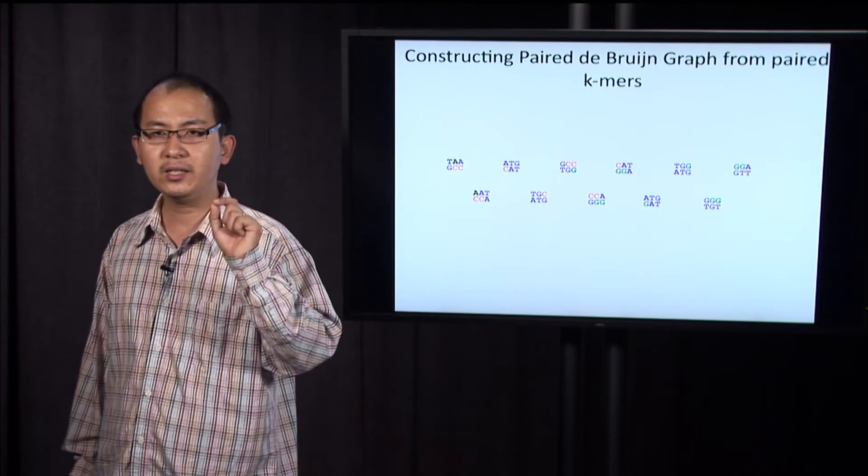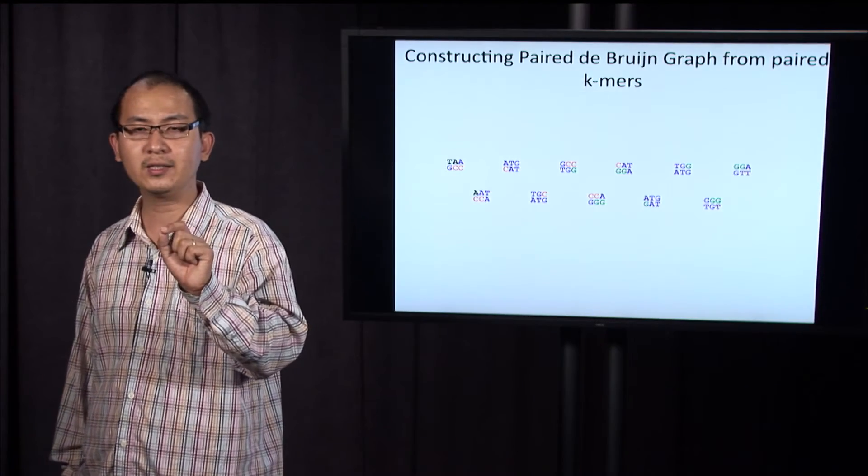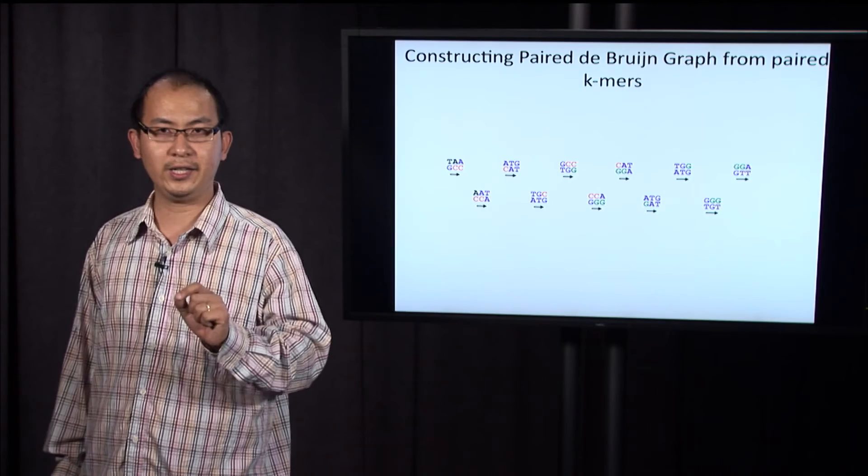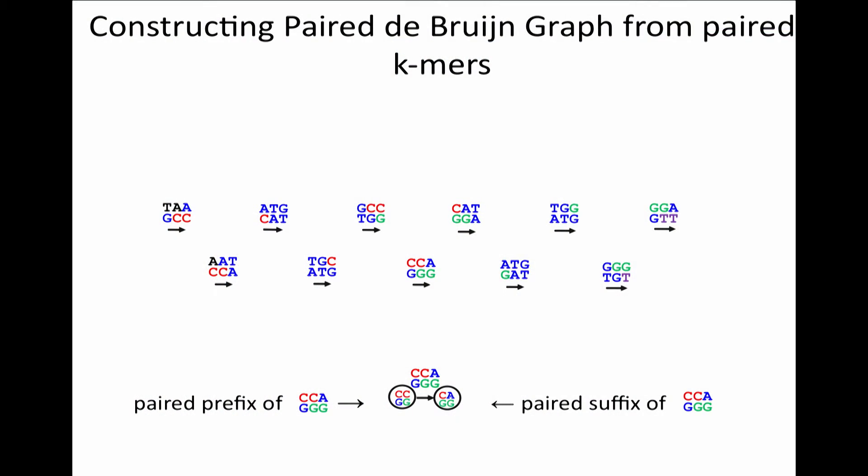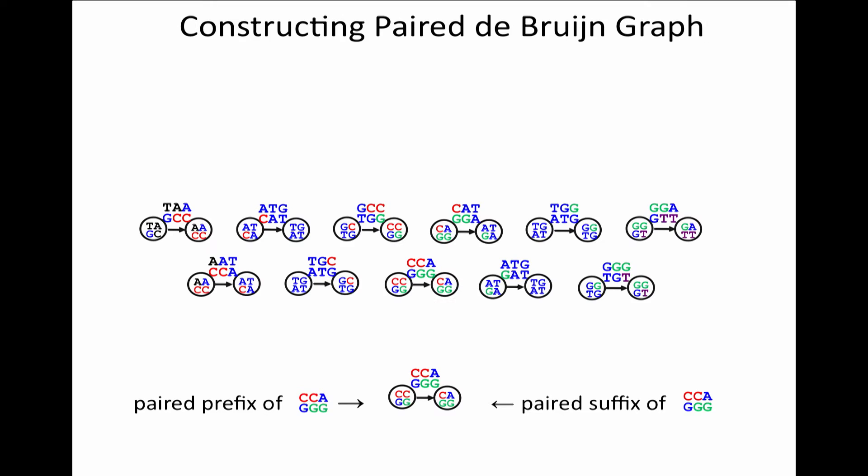Let's represent each paired k-mer by an edge from the paired prefix to the paired suffix. Now, let's do the same thing as the de Bruijn graph. We glue nodes with identical labels together.